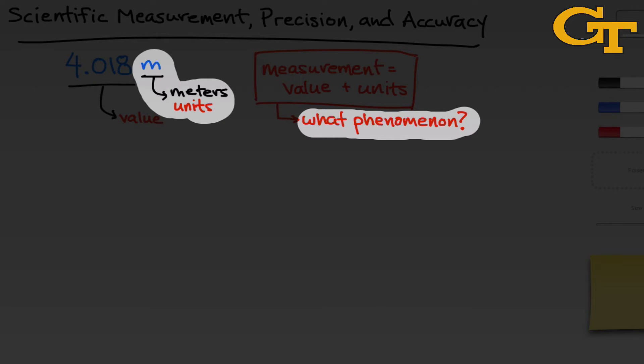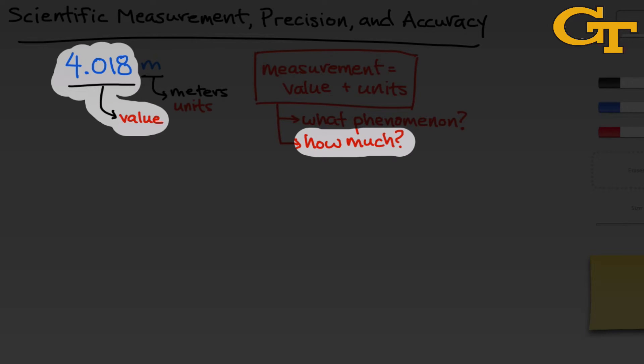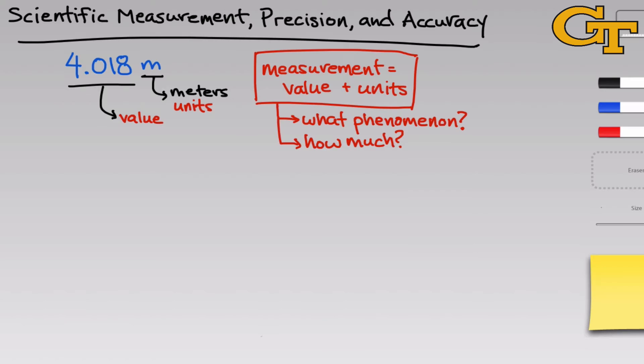And so the measurement represents the phenomenon of length. The second question is, how much of that phenomenon is expressed by the measurement? Here, 4.018 meters is the quantity of length encapsulated by this measurement. So this is fairly straightforward. Every scientific measurement contains a value and units that answer the questions, what phenomenon is being measured and how much of it did we observe?